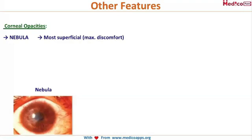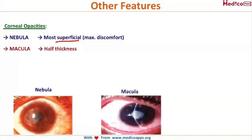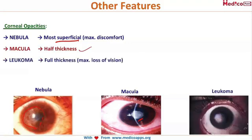The cornea presents with opacities in trachoma. There are 3 types of corneal opacities: nebula is a very superficial, thin opacity causing maximum discomfort; macula is thicker, going about half the thickness of the cornea; and leucoma is a full-thickness opacity, resulting in maximum loss of visual efficiency.